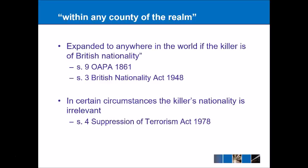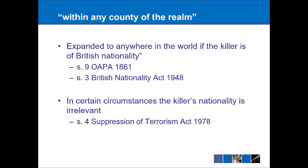The next element from Coke's definition is 'within any county of the realm,' but this has been much expanded nowadays and can extend to anywhere in the world as long as the killer is of British nationality. They can still be tried for murder in England and Wales under Section 9 of the Offences Against the Person Act 1861, as well as Section 3 of the British Nationality Act 1948. It goes even further under Section 4 of the Suppression of Terrorism Act 1978, where the killer's nationality might not even be relevant.